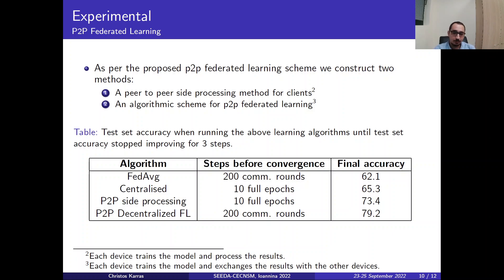Where each device trains the model and processes the results of itself and of other peers. And we have an algorithmic scheme for peer-to-peer federated learning, where each device trains the model and exchanges their results with other devices, as well as the weights of its neighbors.